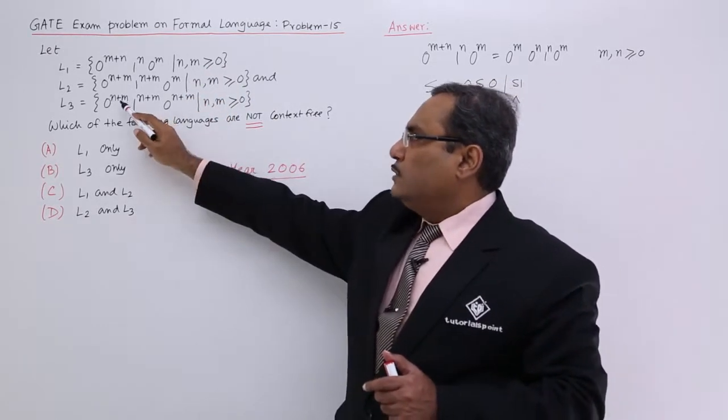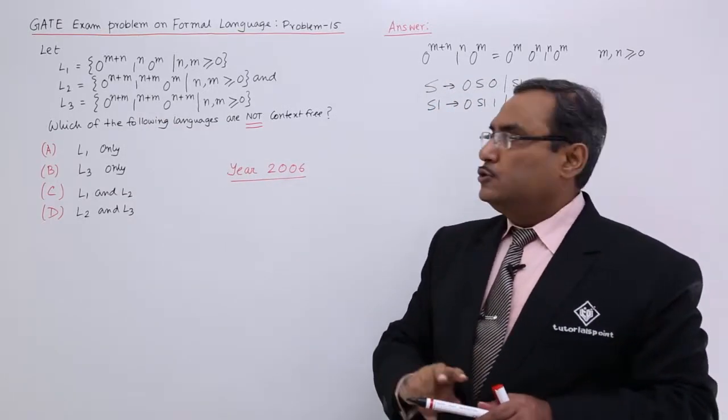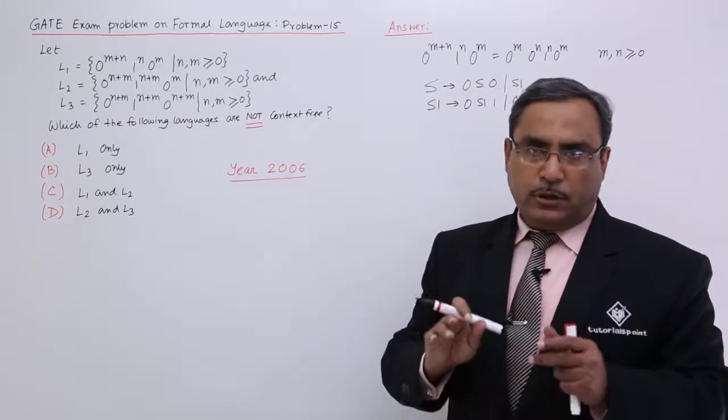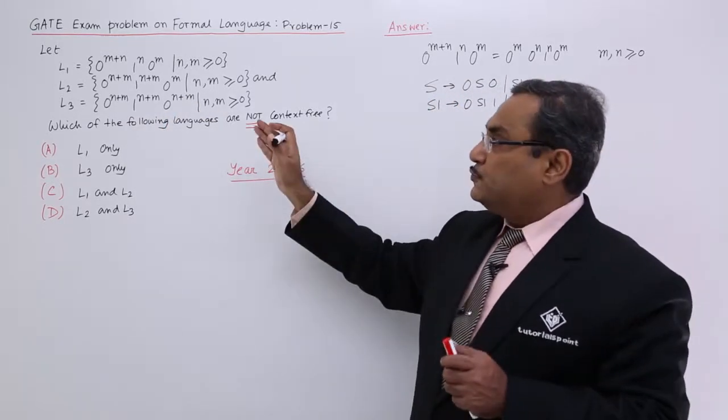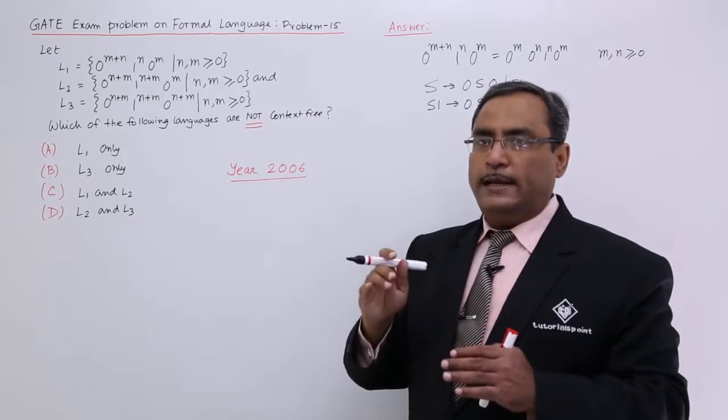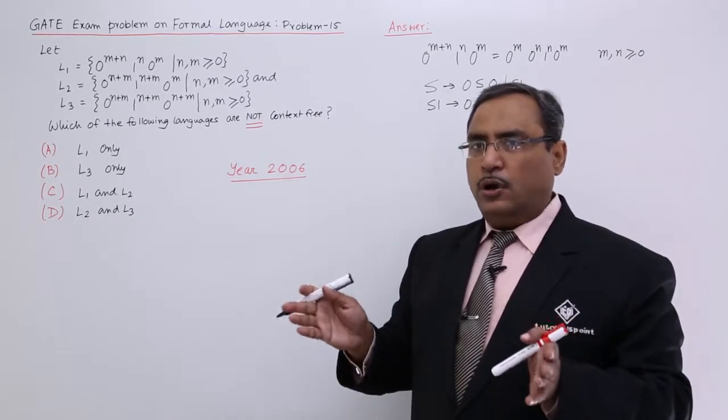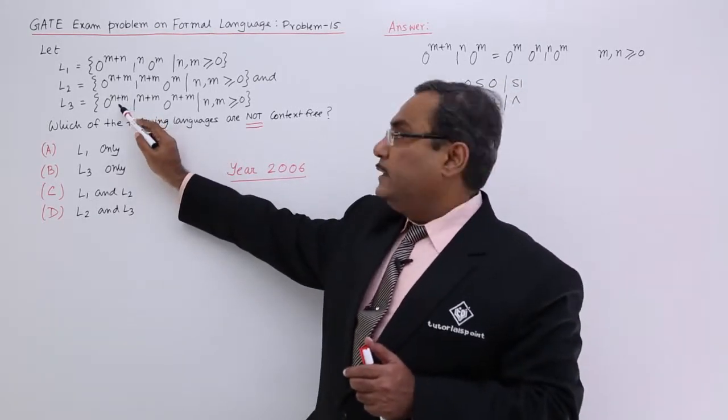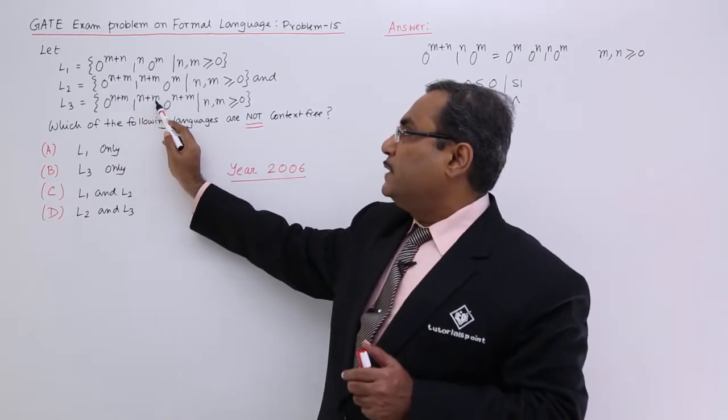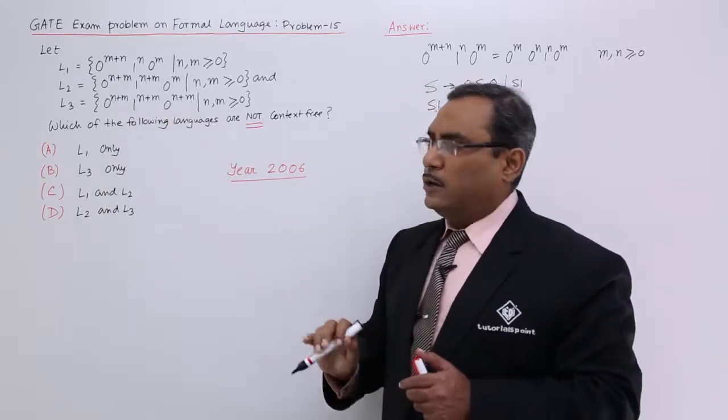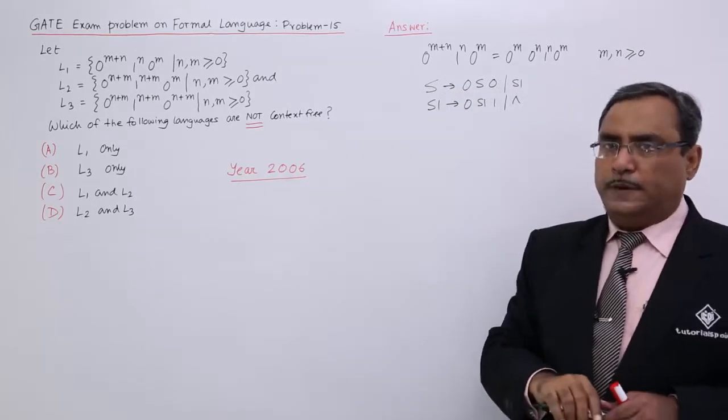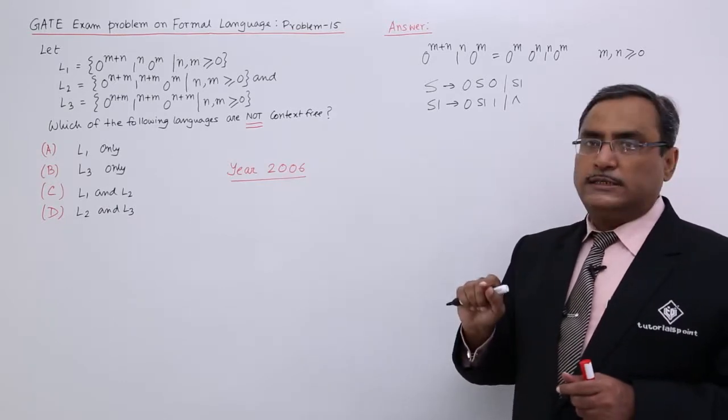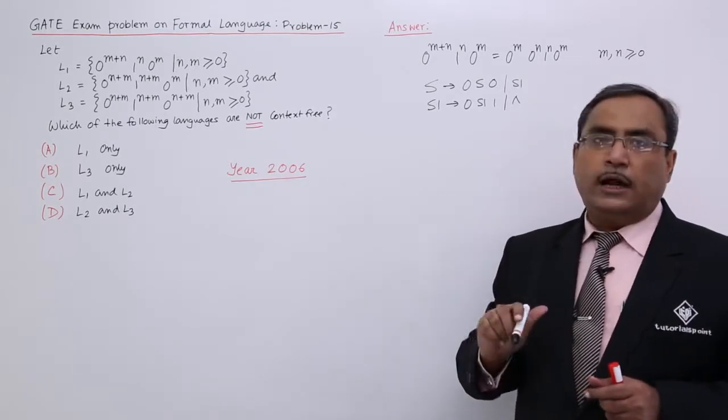What about this one? If you consider n plus m is equal to k, it is 0 to the power k, 1 to the power k, and 0 to the power k again. We have solved such problem a to the power n, b to the power n, c to the power n and there we saw that the grammar is not context free. But here it is not k but it is m n, m plus n plus m and n plus m. So here also you cannot suggest any context free grammar which will have such language. So only L1 is context free, but L2, L3 they are not context free.